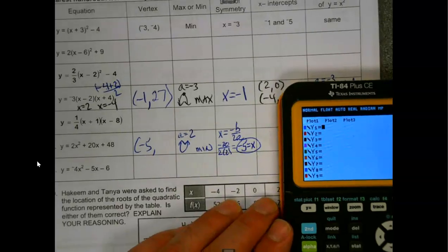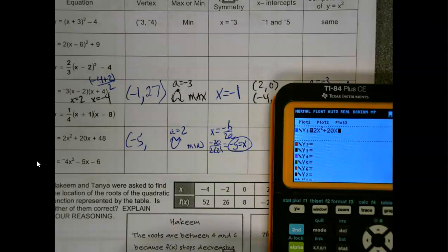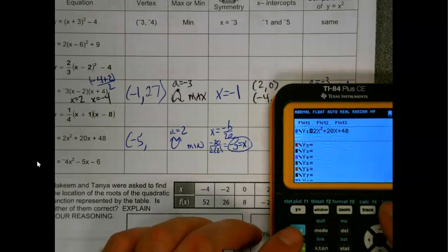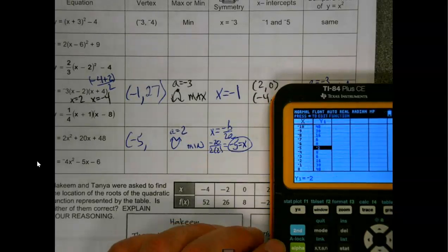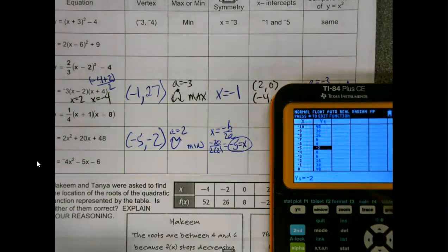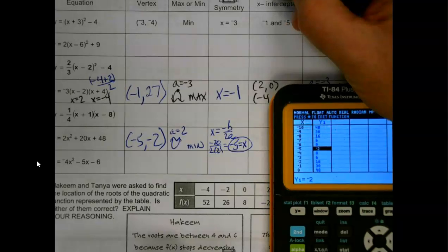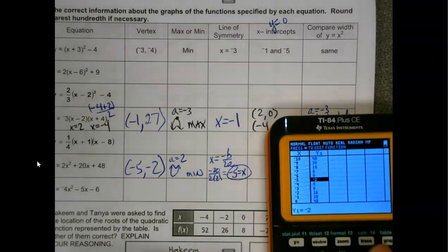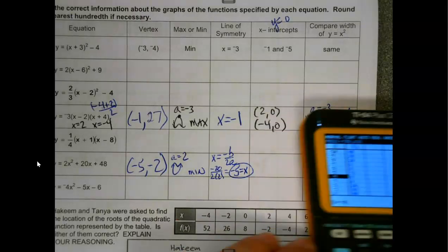Again, your call if you want to. No problem going to the calculator here. It's like, all right, negative 5, is that in the middle? It certainly is. Negative 5, negative 2, ding ding. X intercepts occur when y equals 0. Do I get lucky? Ooh, I did. Negative 6, negative 4.